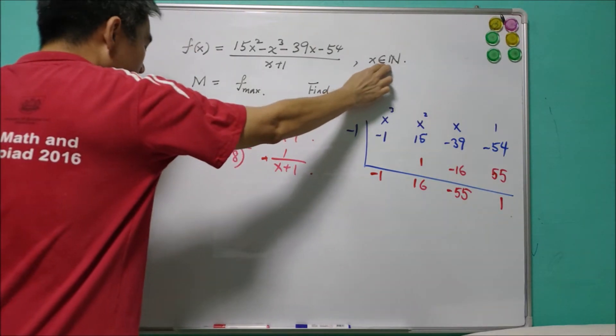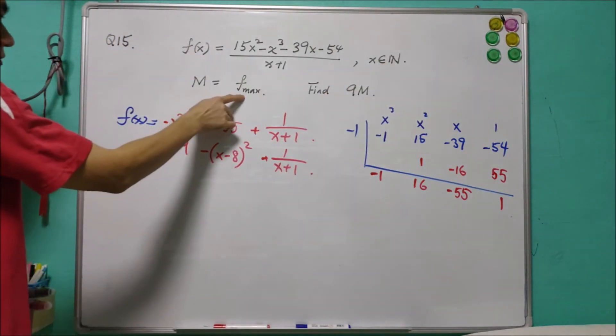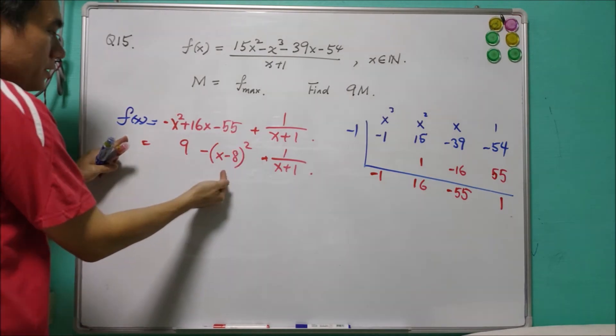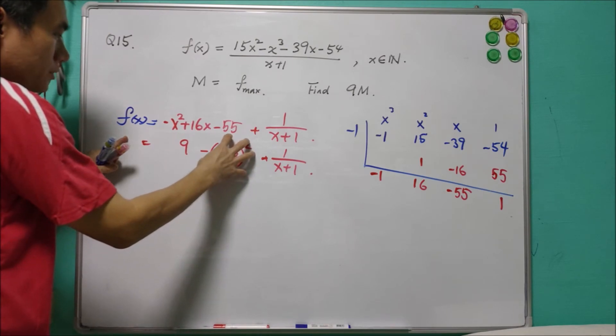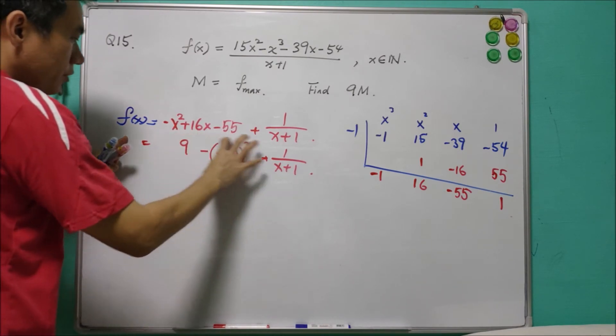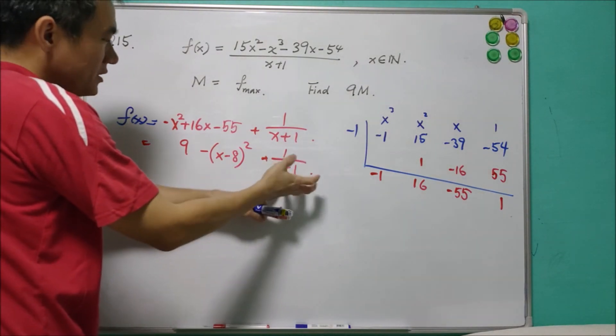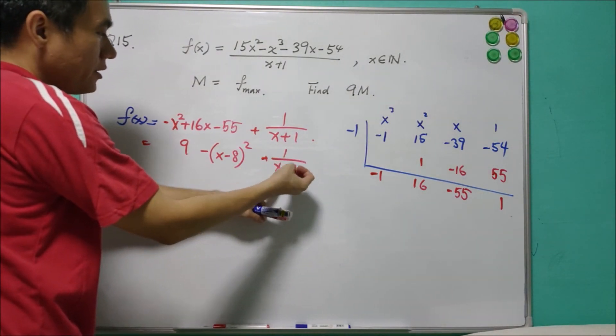Since x is an integer, in order to get a maximum value for f, x has to be close to 8, so that this will disappear. Because this term always contributes a big portion for the value. Whereas, 1 over x plus 1 does not have great influence.